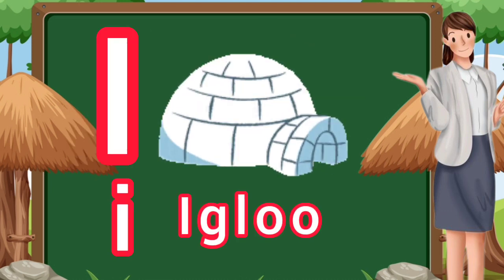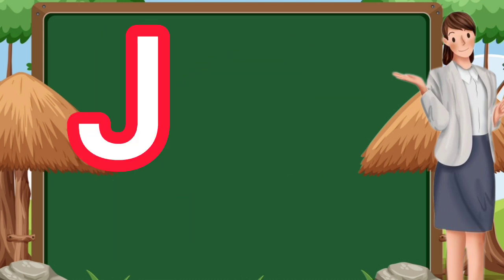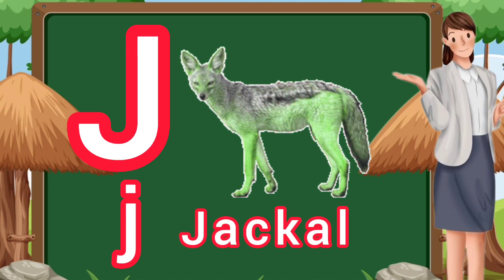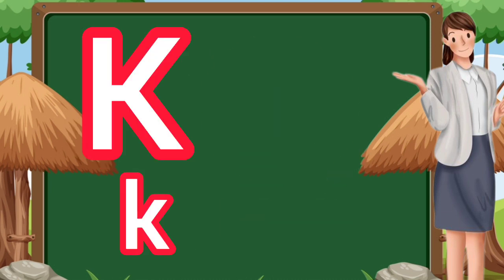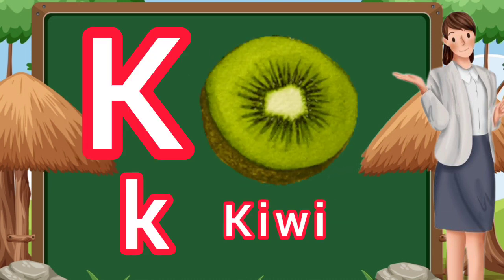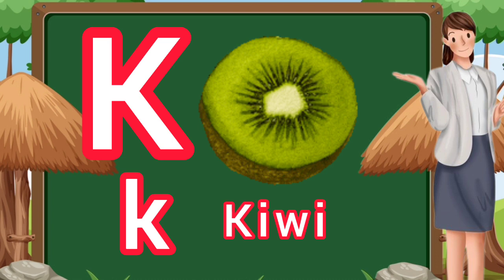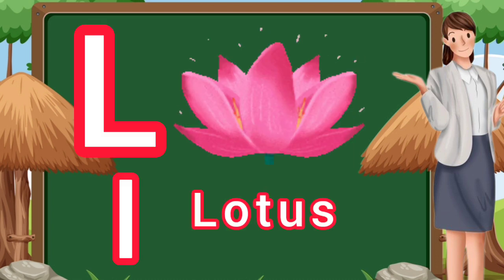I. I for igloo. J. J for jackal. K. K for kiwi. L. L for lotus.